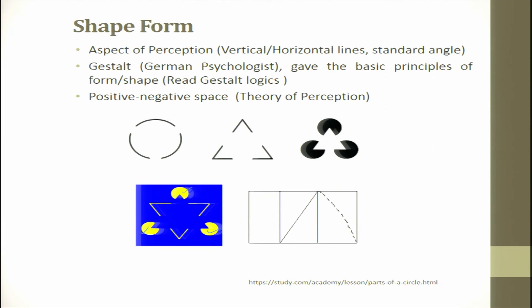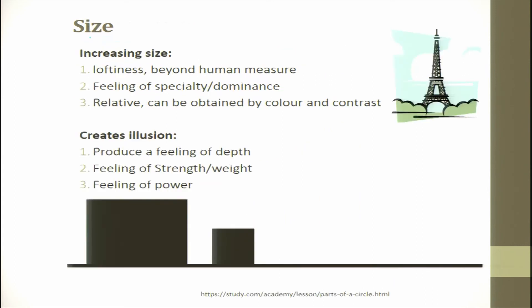Shape forms involve aspects of perception: vertical or horizontal lines, standard angles, and Gestalt principles — the German philosophy giving basic principles of form or shape. You can also have positive or negative shapes, which relate to depth or raised features.